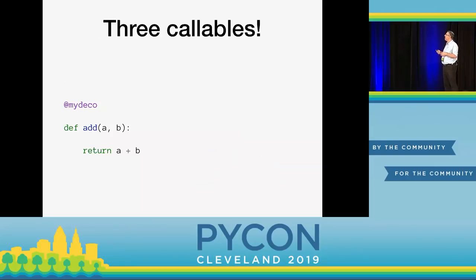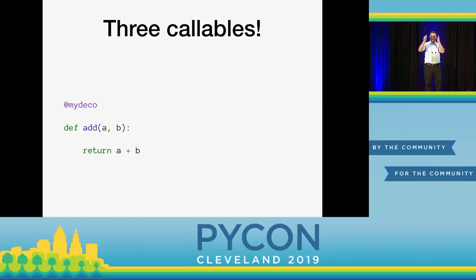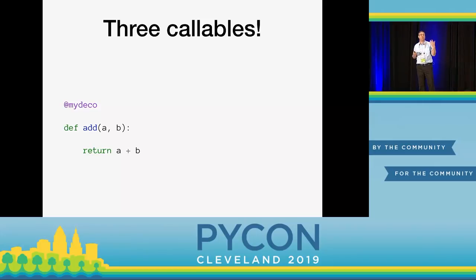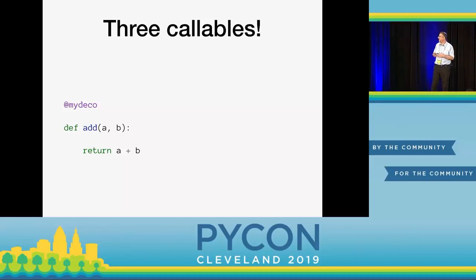When we do this, we have three callables in this seemingly simple code. A callable is fancy Python speak for something we can execute. If you try to say five-parentheses in Python, at runtime Python says integers are not callable. Certain things in Python are callable — typically functions and classes. So we actually have three callables here. For most of this talk I'm going to be talking about functions; toward the end, we'll talk about classes as well.